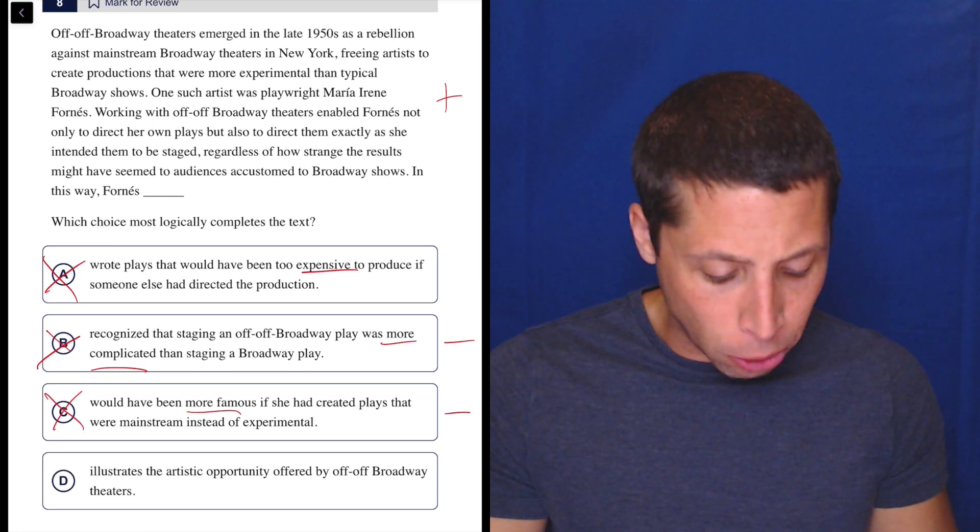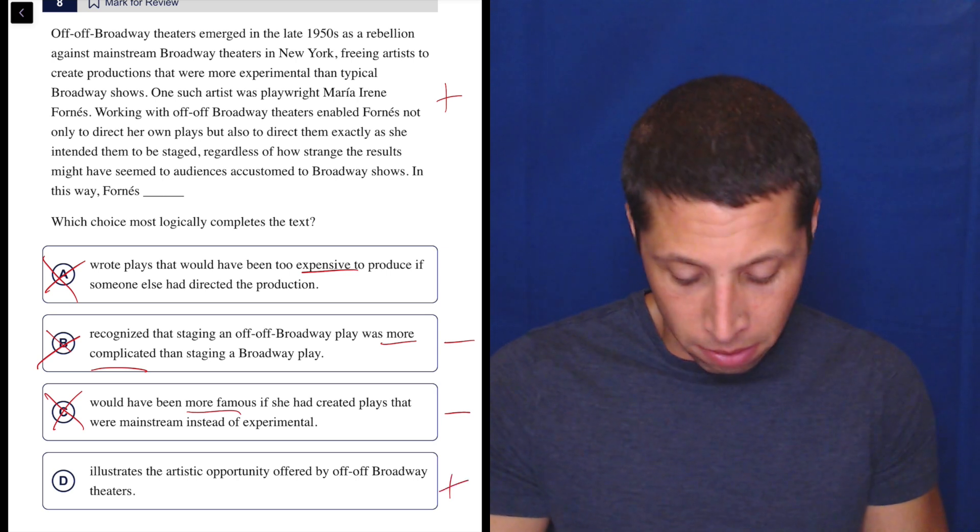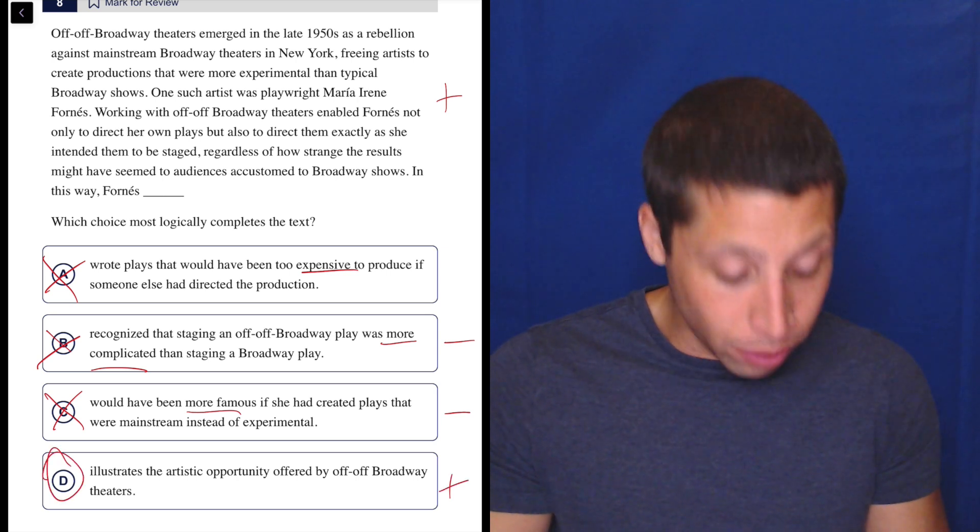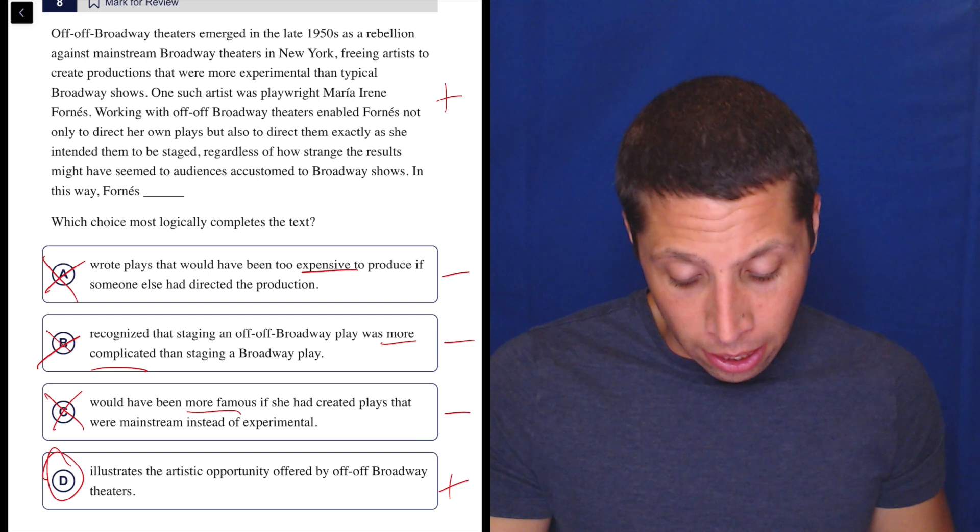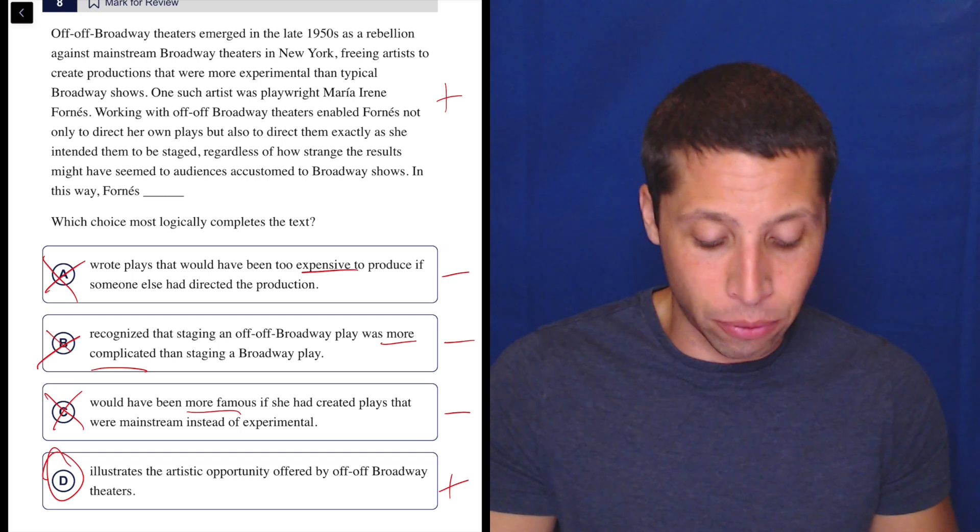D, illustrates the artistic opportunity offered by Off-Off Broadway theater. Yeah, positive. Done. So in fact, all of these are negative, really. Dumb summary really helps here. Just connotations sometimes really make a difference.